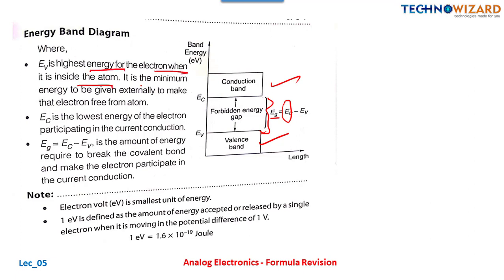Ev is the highest energy for an electron when it is inside the atom — it is the minimum energy to be given externally to make that electron free from the atom. Ec is the lowest energy of the conduction band. Eg is the difference, representing the amount of energy required to break the covalent bond and reach from the valence band to the conduction band, making the electron participate in current conduction.